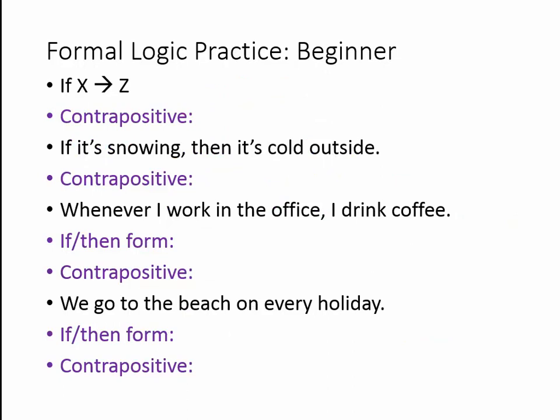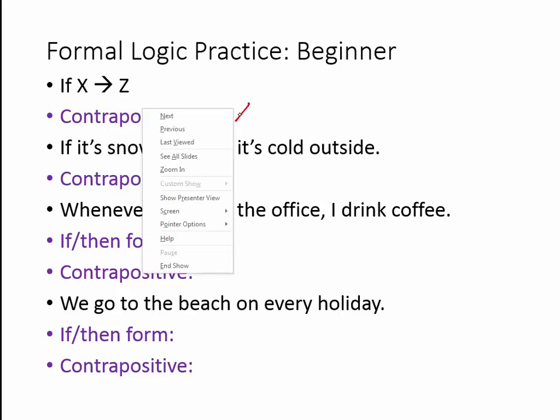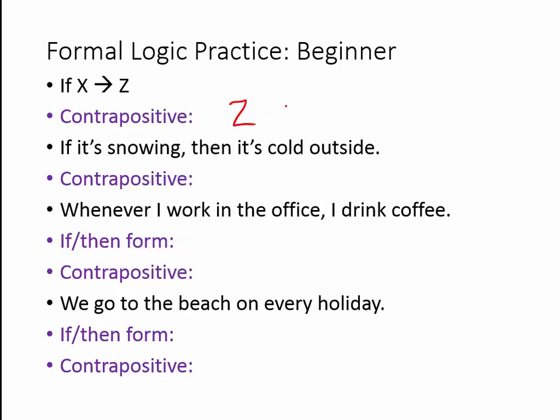Let's take a minute to practice if-then statements and contrapositives. Go ahead and pause the video and fill in the contrapositives or the if-then forms for each of the sentences on the page. Let's walk through these one at a time. For the top one — if-X-then-Z — forming the contrapositive, we're going to flip the terms and then put 'no' in front to negate them. So our contrapositive of if-X-then-Z is if-no-Z, then-no-X.